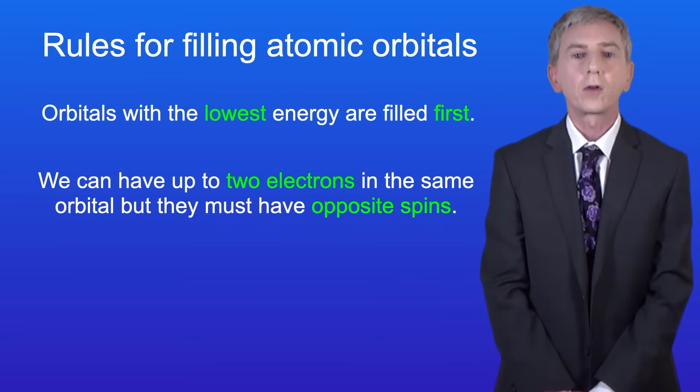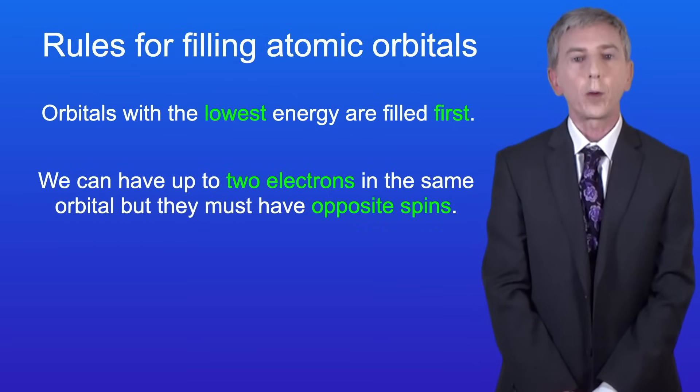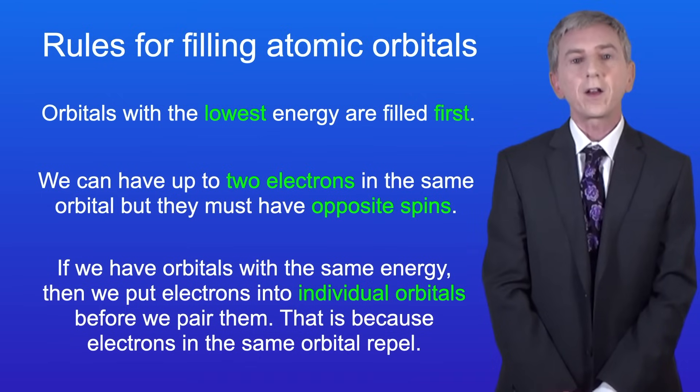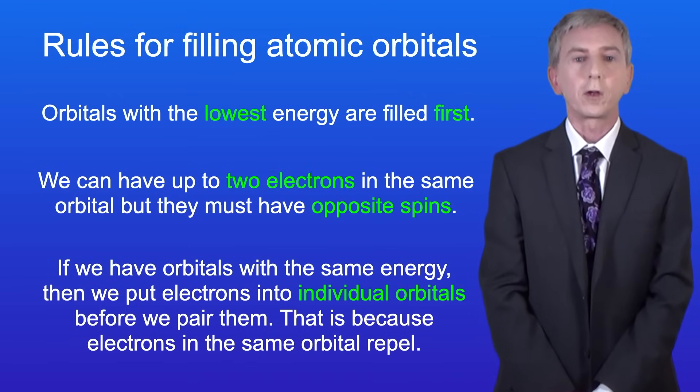Secondly, we can have up to two electrons in the same orbital, but they must have opposite spins. And lastly, if we have orbitals with the same energy, then we put electrons into individual orbitals before we pair them. And that's because electrons in the same orbital repel.